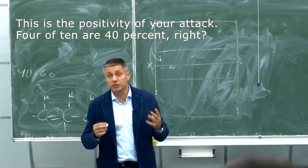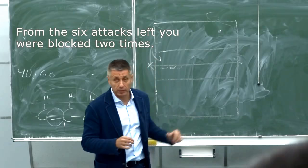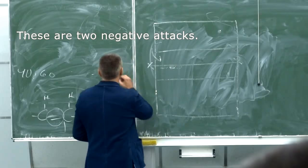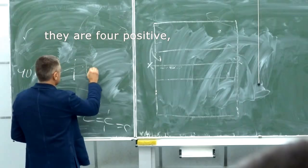4 от 10 е 40%. Обаче от останалите 6 топки два пъти са ви хванали на блок. Това са две негативни атаки. So we have 4 positive ones and 2 negative ones.